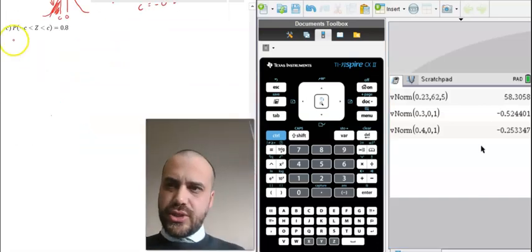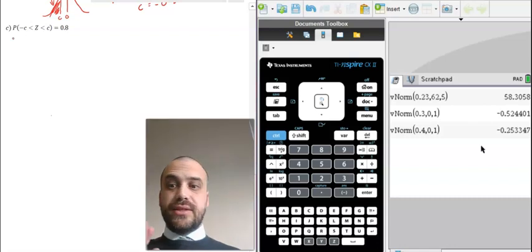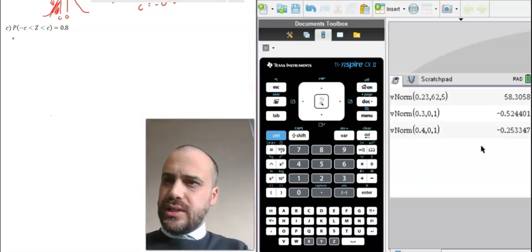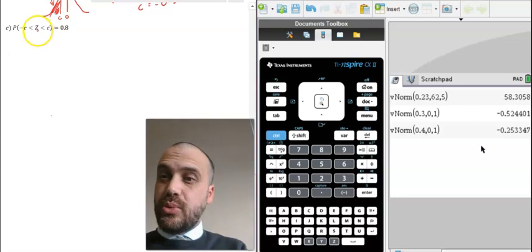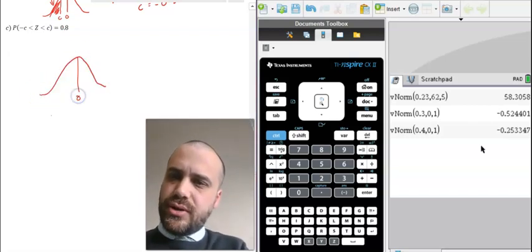Let's do this last question here. I'm telling you, if you're not drawing pictures here, you are definitely going to get these questions wrong. So, let's take a look at it. The probability that Z is between negative C and C is equal to 0.8. So it's a standard normal again, so it has a mean of 0 and Z is between negative C and C.